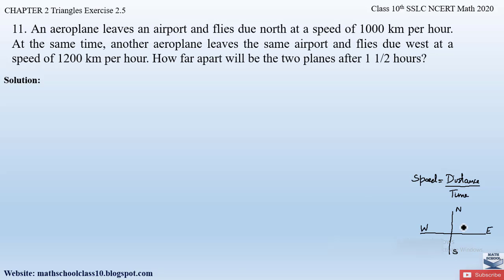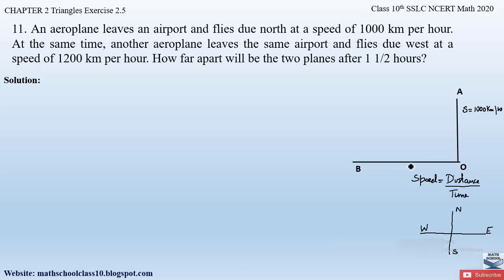Now let us understand the question. An aeroplane leaves the airport and flies due north at a speed of 1000 kilometers per hour. Let us draw the figure — here the speed is 1000 km/h going north. At the same time another aeroplane leaves the same airport and flies due west at a speed of 1200 kilometers per hour. Let us draw another line depicting the aeroplane moving in the west direction at 1200 km/h.